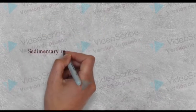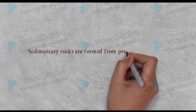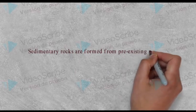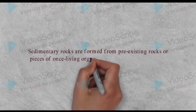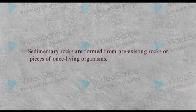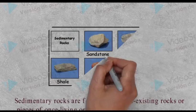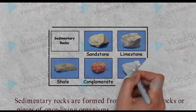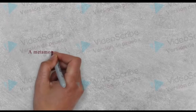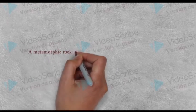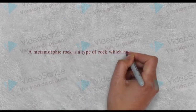Sedimentary Rocks are formed from existing rocks or pieces of once-living organisms. We have another example here of Sedimentary Rocks.